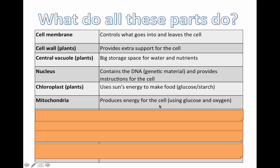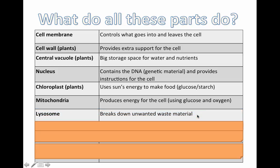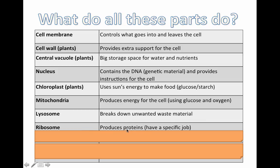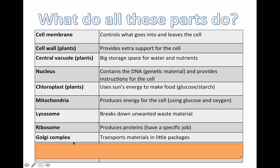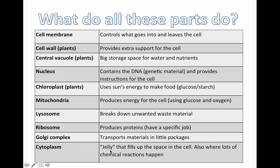Mitochondria produce energy for the cell using glucose. We can do that too, but I have to actually eat the glucose — plants can use the glucose that they've made by themselves. Lysosomes are like the garbage men; they break down unwanted waste material. Ribosomes produce proteins, and these proteins have specific jobs inside the cell. The Golgi complex transports materials in tiny little packages called vesicles. And finally, the cytoplasm is the jelly that fills up the space in the cell — it's not technically jelly, but it's where a lot of chemical reactions happen.